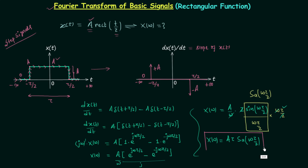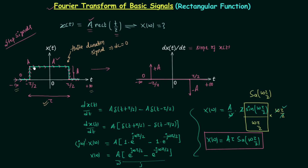You might ask about the DC value. The DC value of this signal is equal to 0 because it is a finite duration signal, and finite duration signals have DC value equal to 0 — x(t) is non-zero only for duration tau, so the average from minus infinity to infinity is 0. Since the Fourier transform of DC value zero is zero, adding 0 to A tau sinc(omega tau by 2) does not change anything.